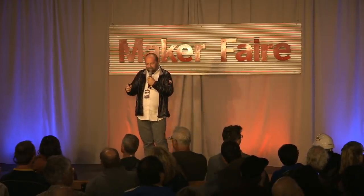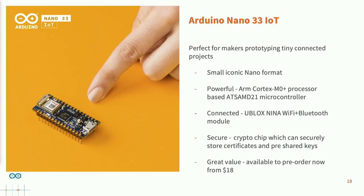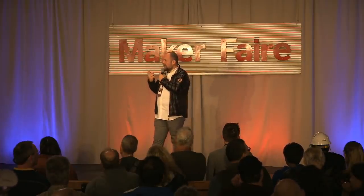The Nano 33 IoT is still the iconic Nano format. It's based on a Cortex-M0 processor and has a u-blox module that provides Wi-Fi and Bluetooth connectivity. We just love those u-blox modules — you see them everywhere on our connected products. It is also secure: it's got a crypto chip, a secure element that makes communication and authentication with cloud services based on a hardware token, so it is way more secure than any software-based technology. We tried to compress the price and it's available for pre-order for about $18 — a way for people to be able to build a secure, connected project.